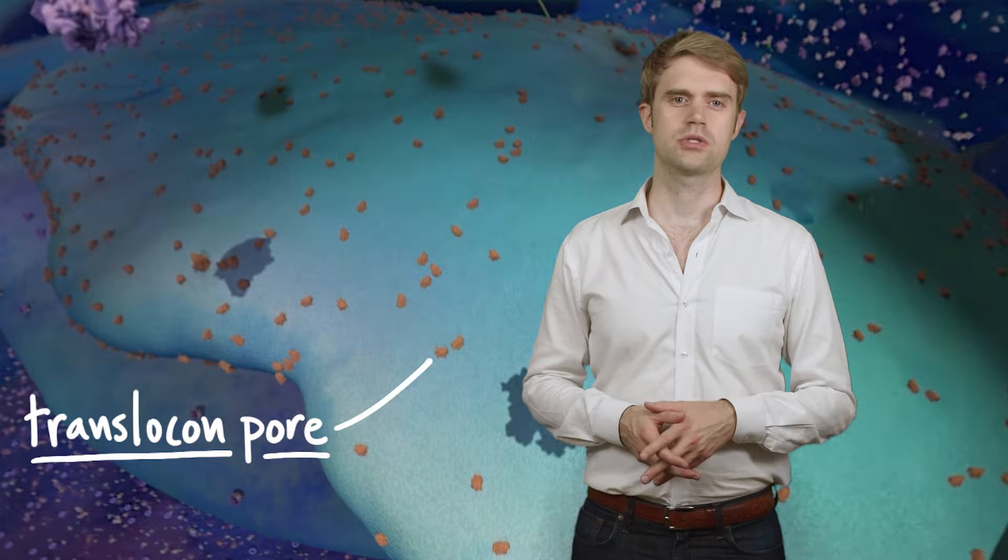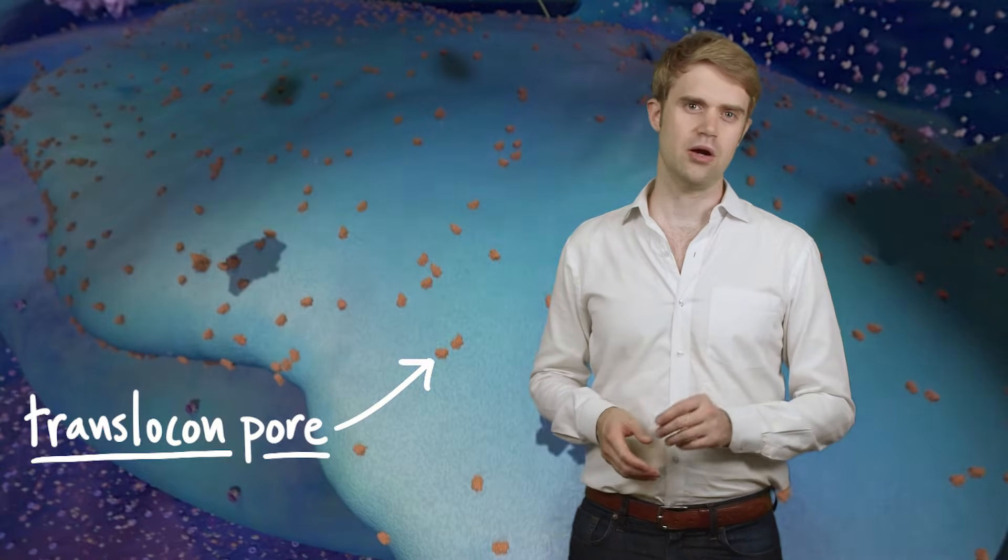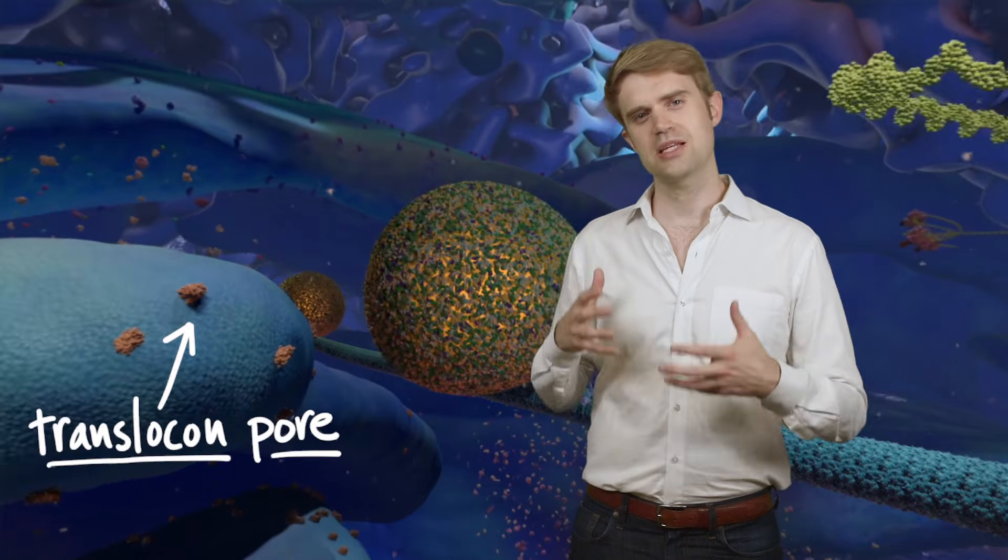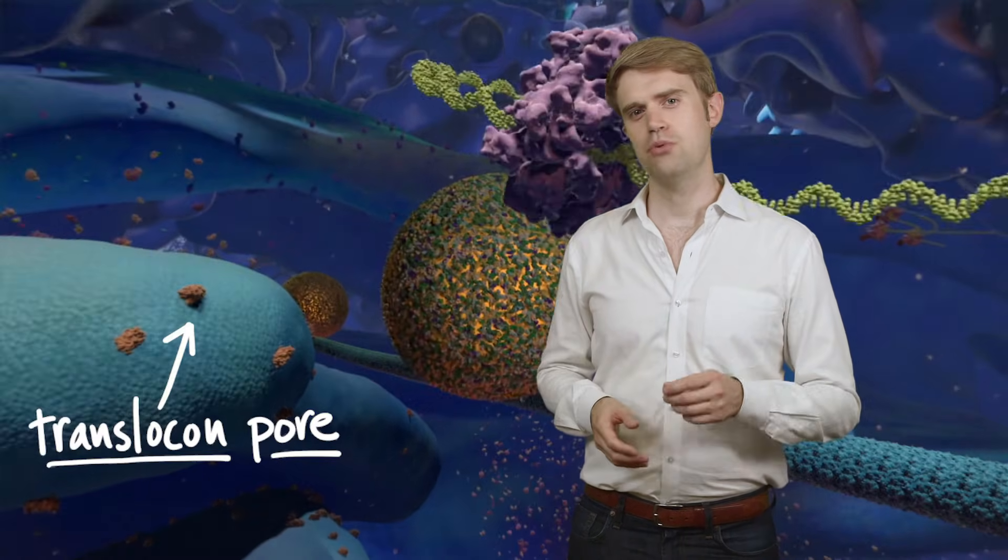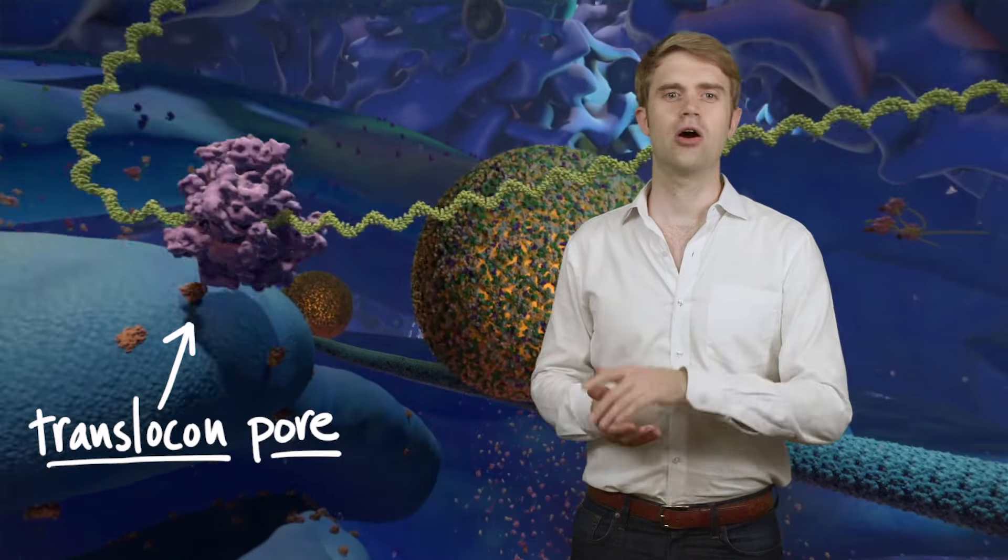The orange dots are called translocon pores. There are little holes in the ER. Ribosomes attach to these holes and push newly made proteins right into the ER.